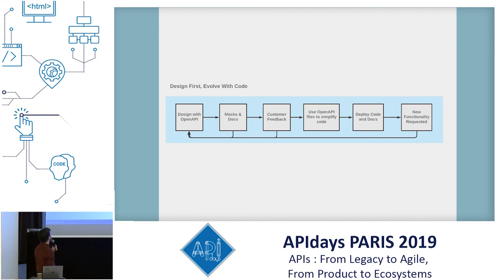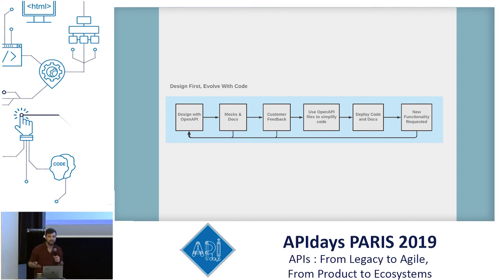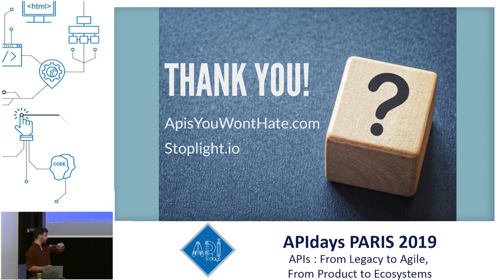So we have this wonderful feedback loop that we talked about at the start, and because you've been using your stuff in production, when somebody requests new functionality, you know for a fact that it's up to date, so you can very easily create a new endpoint, model everything, and that's fine. I think I nailed that for time, so we have time for questions.